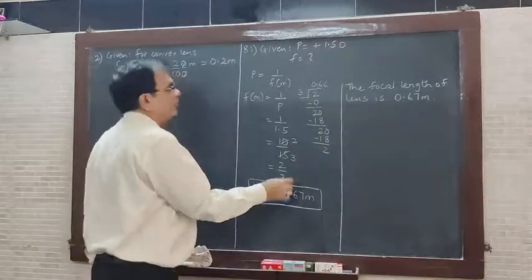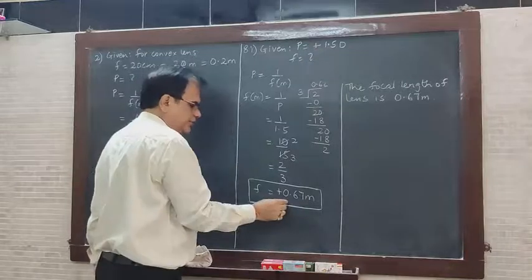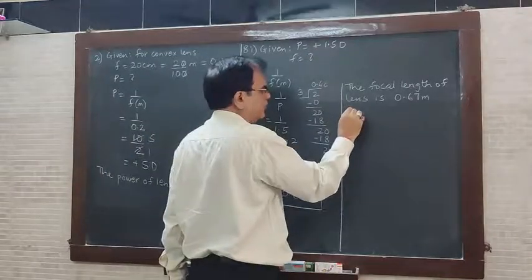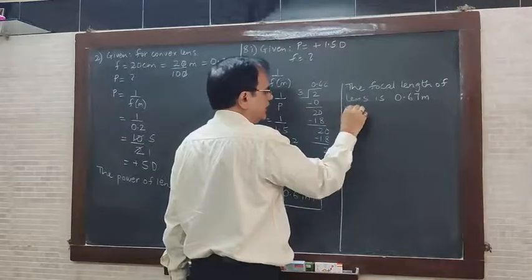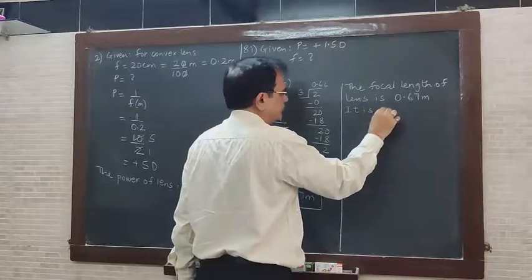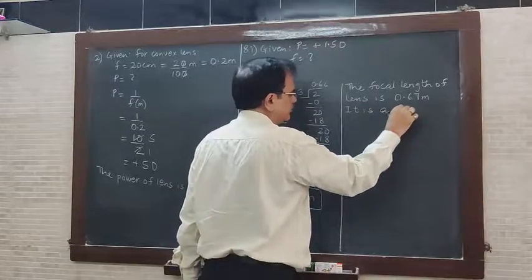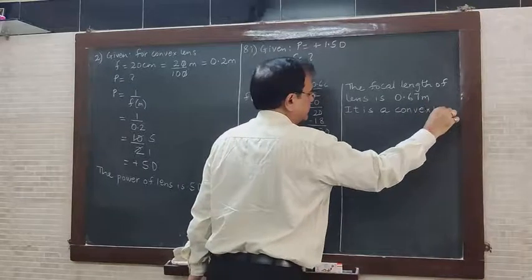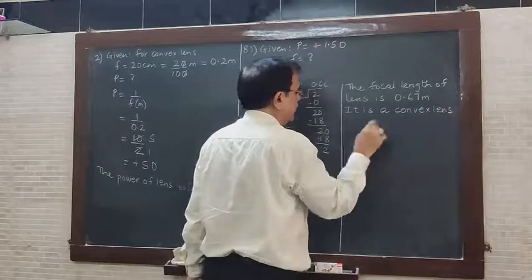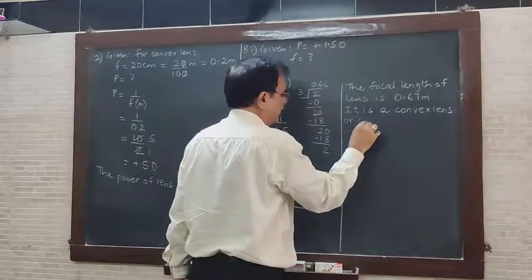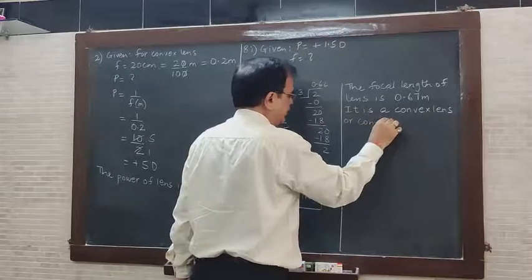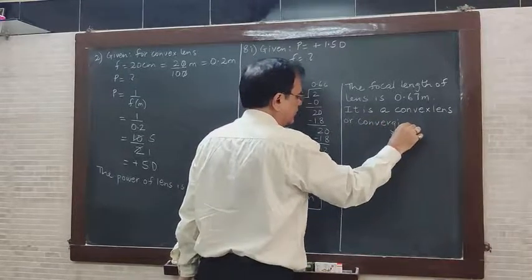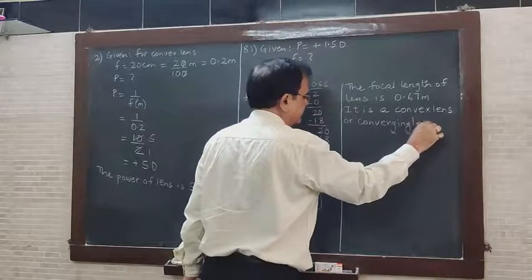Positive power or positive focal length indicates a convex lens. So it is a convex lens, also called a converging lens.